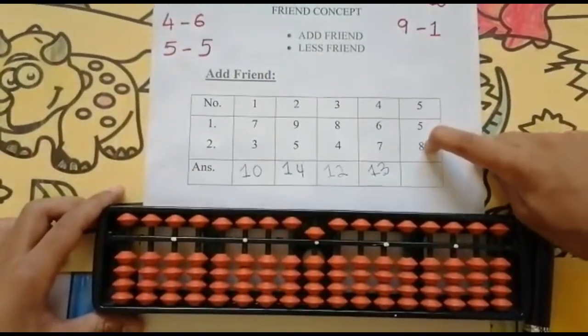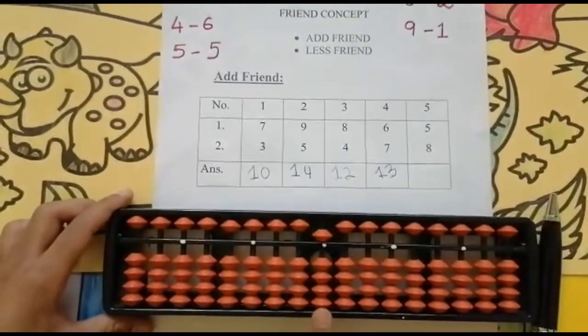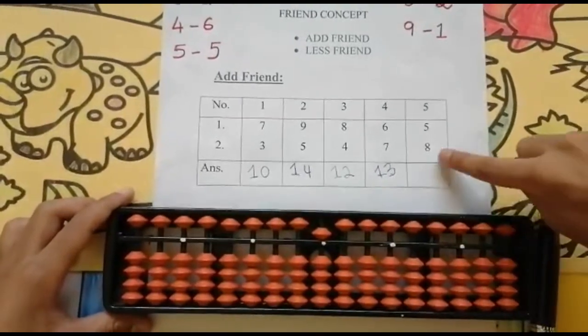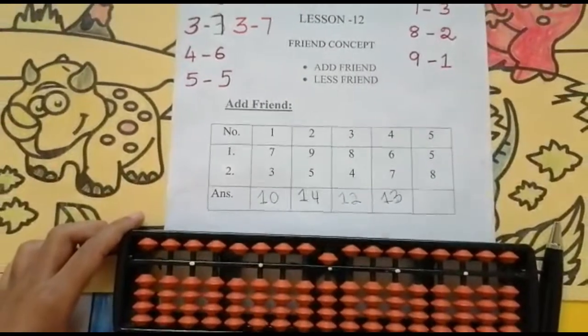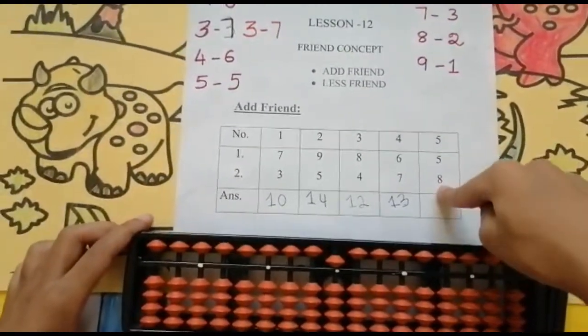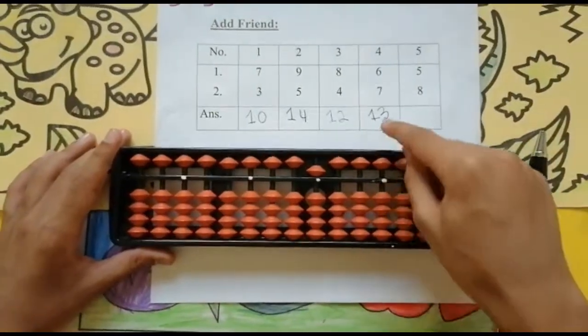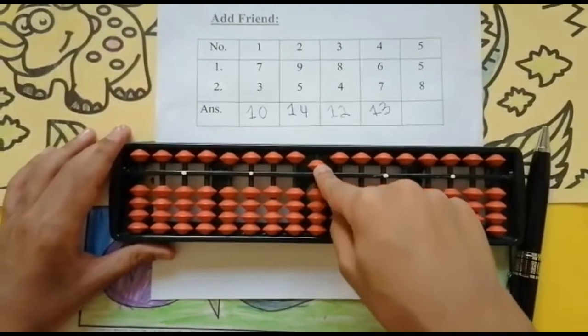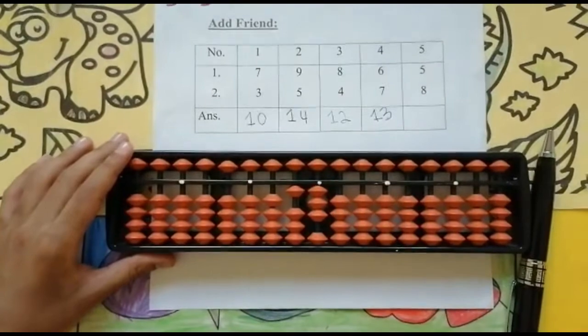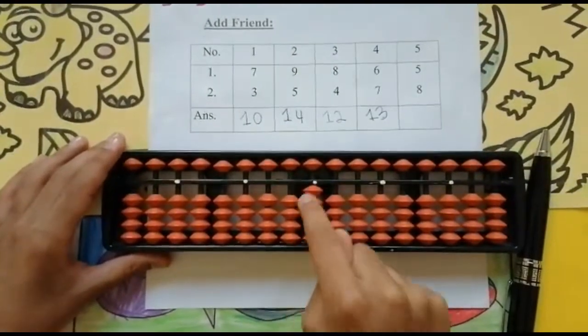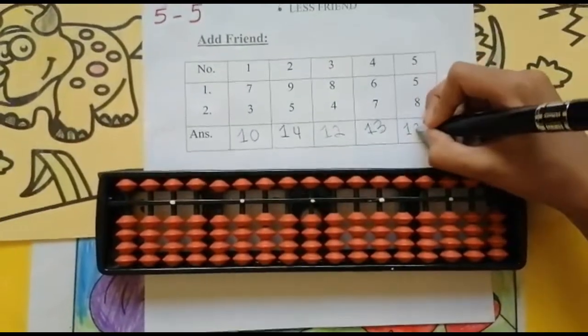Now add eight. Is it possible? No. I have only four values but I need to add eight values. It is not possible. So friend of eight is two. Now I will reduce two and then I will add ten. Keeping the finger got thirteen. Set zero and the answer is thirteen.